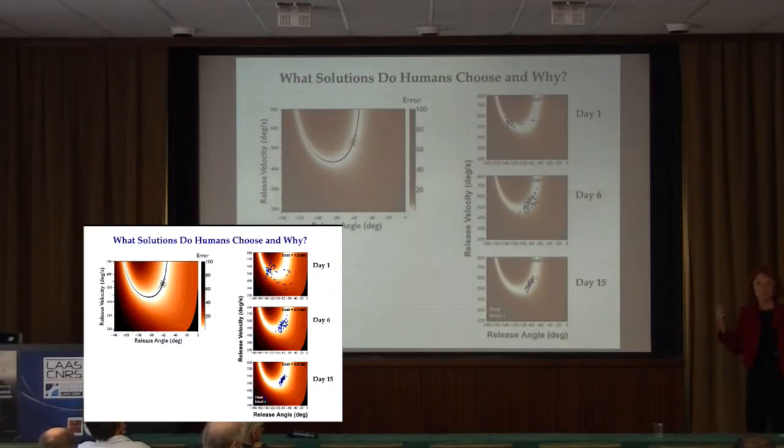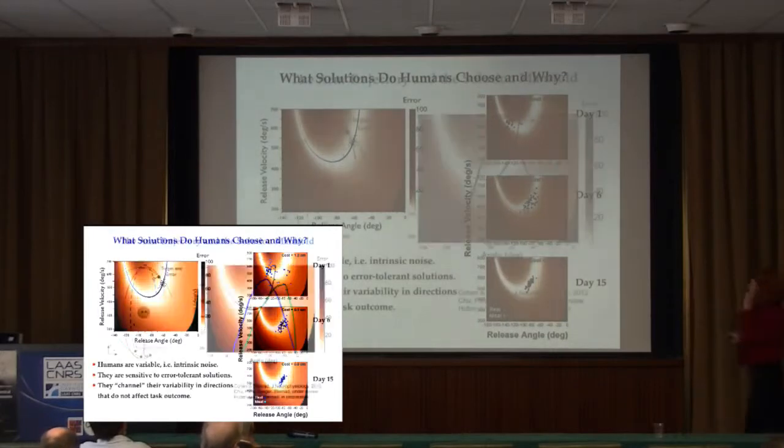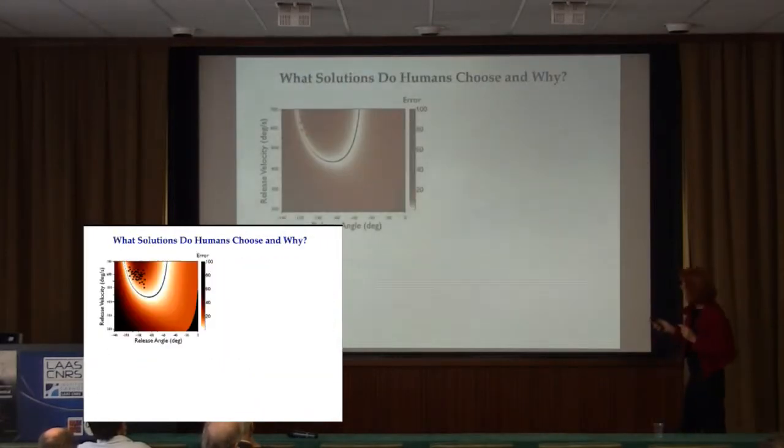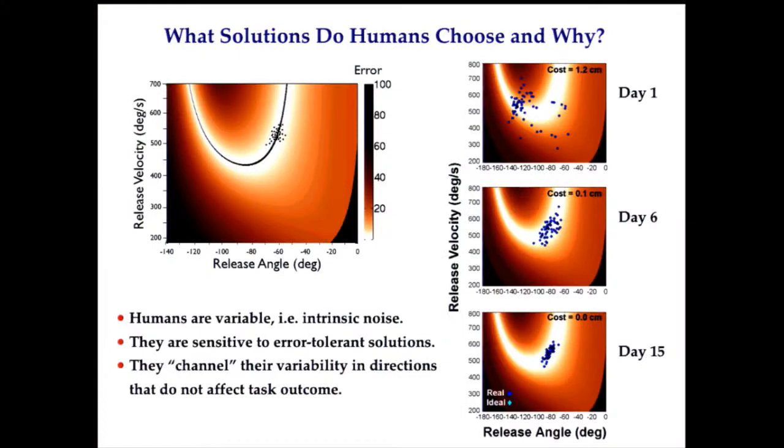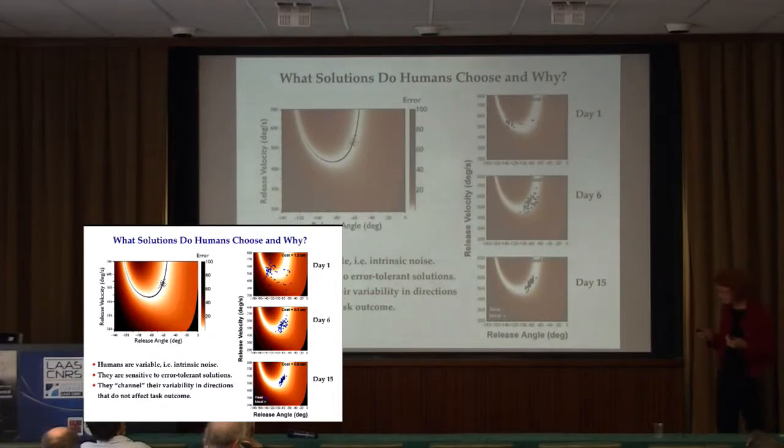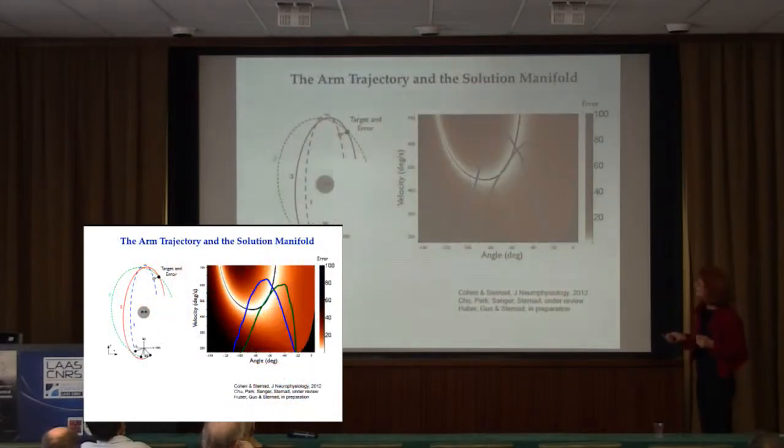The lessons that we learned from this work is that humans have noise, they're sensitive to error-tolerant solutions, and then they channel their variability in directions that does not affect the task outcome. One more interesting way of analyzing performance here is the following. As you might have noticed, angle and velocity is also state space of the arm movement. So, we can also plot the arm trajectory against this solution space.